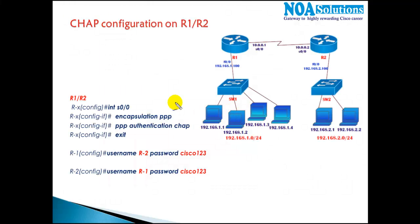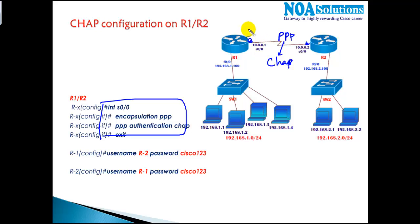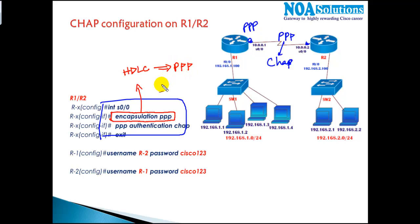To configure these authentications we need to go into the interface. We'll verify the commands needed to use PPP as the protocol on both sites with CHAP or PAP authentication. The first command is to go to both router interfaces and use PPP protocol. The command to change encapsulation is: encapsulation PPP. By default, HDLC runs on serial links — this command switches to PPP, which is required to support authentication.